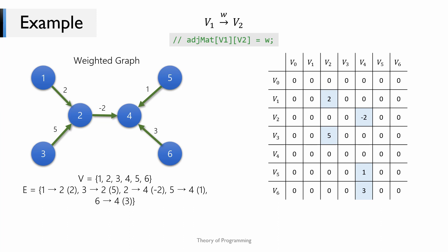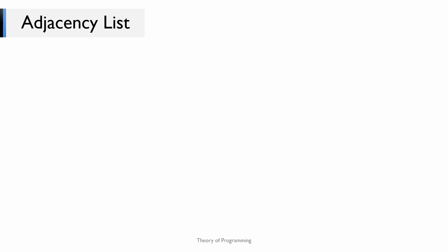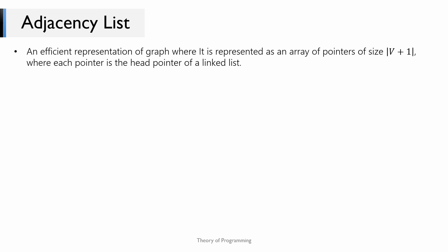An adjacency matrix is as simple as a 2D array of integers — if you have ever used a 2D array, you already know how to code an adjacency matrix. Now let us look at the adjacency list. An adjacency list is one of the most efficient representations of a graph. In simple terms, an adjacency list is an array of linked lists where each linked list belongs to each vertex. Formally, it is an array of pointers of size V+1 where each pointer is the head pointer of a linked list.